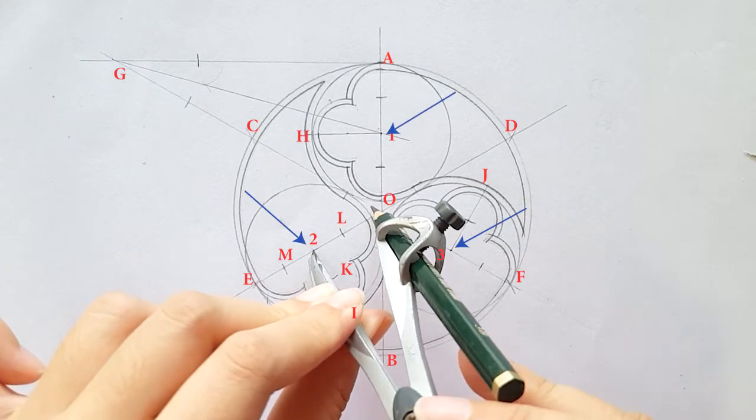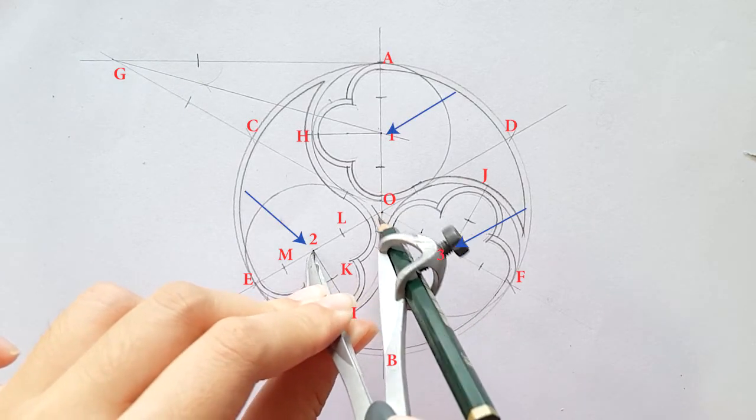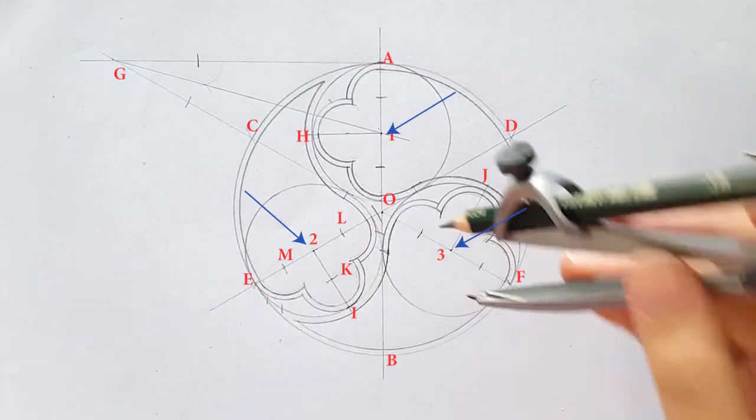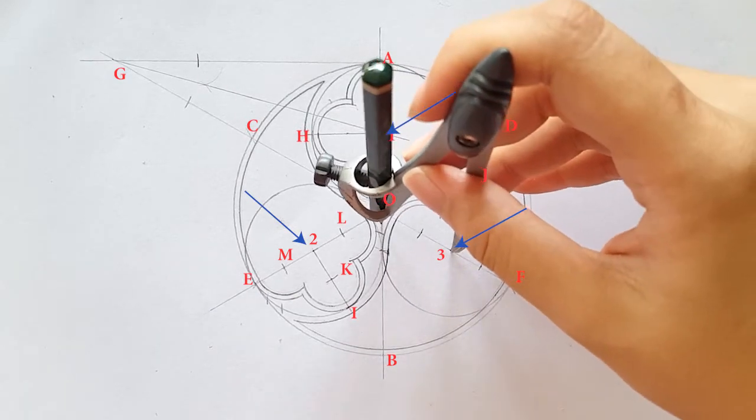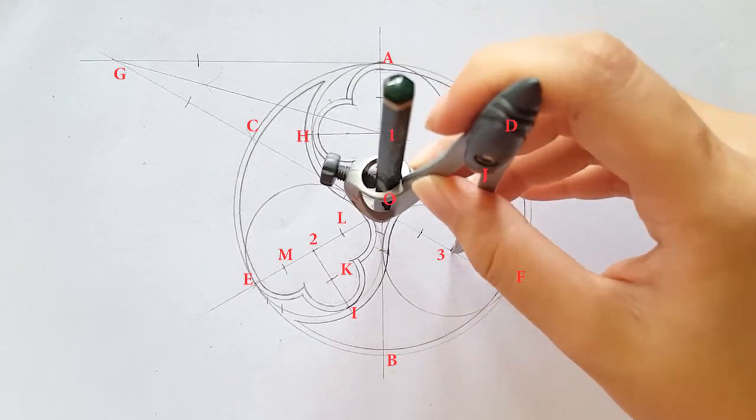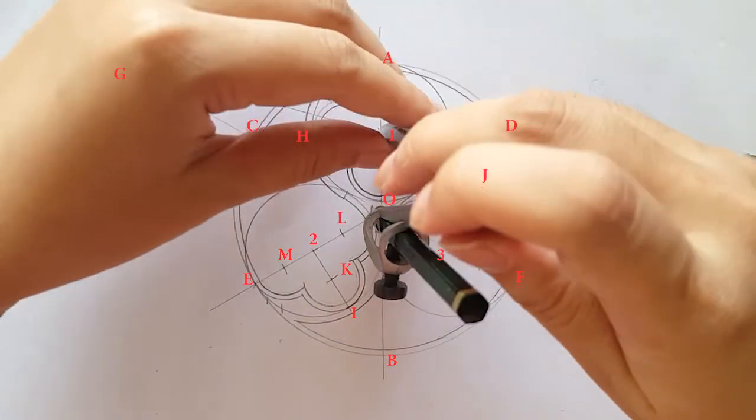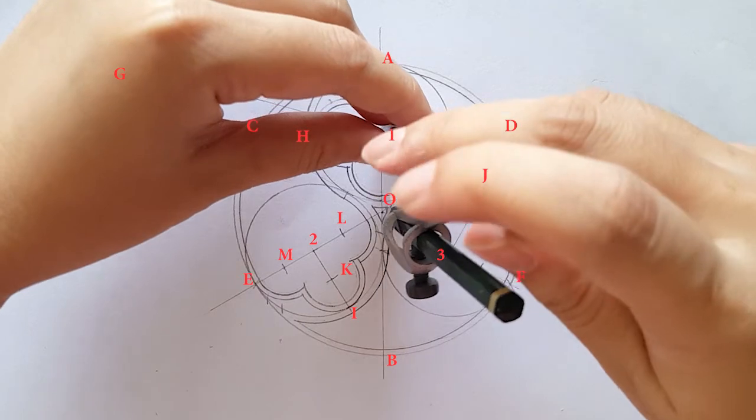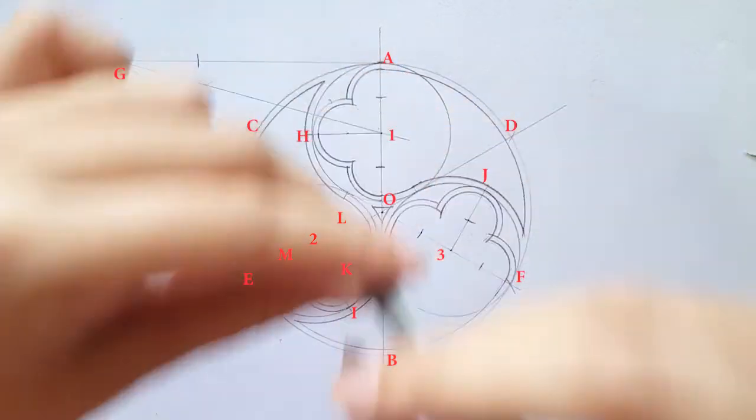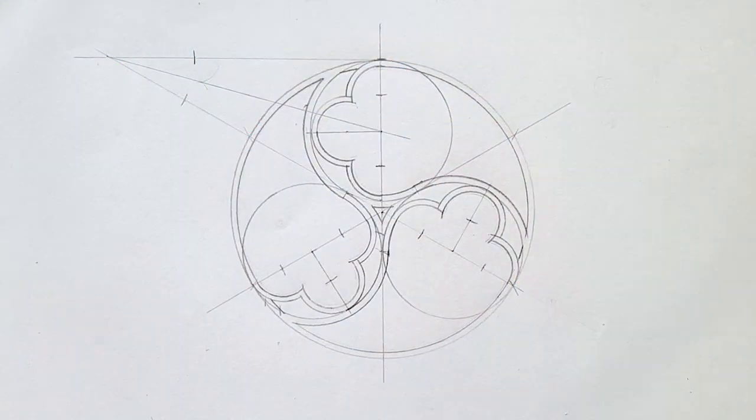With the same length, place your compass on these points again to draw a tiny arc outline at the center as shown in the video. The sketch of the element is complete.